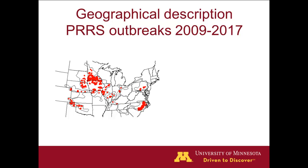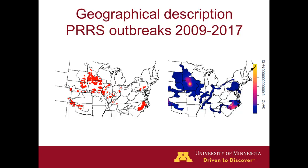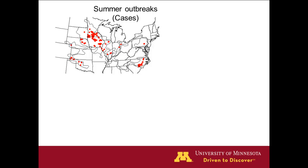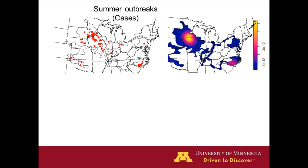Now we want to describe this data geographically. Here you have dots for all 1,500 outbreaks across the U.S. When you just see dots, you can't really make a good inference. So we use density maps to identify areas where more outbreaks occur — in dense areas you have more outbreaks. We then break this down into summer outbreaks specifically and create a density map to show where these summer outbreaks are occurring.